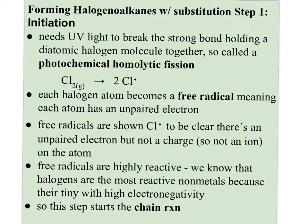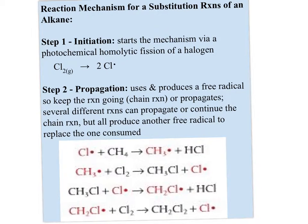In initiation, UV light splits apart a halogen molecule to create the free radicals — one molecule gives you two free radicals. The chlorine with a little dot next to it shows there are seven electrons: six are paired and there's one unpaired electron making it very reactive. But it's not an ion — there's no charge on it. It's a neutral atom, but a very unstable one.